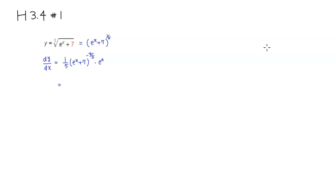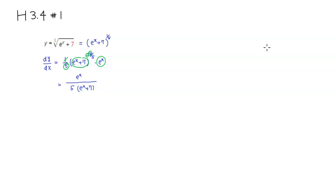To rewrite this: e to the x lives upstairs, so we put e to the x on top. There's a five on the bottom, so we put five on the bottom. Since we have a negative power, e to the x plus seven goes to the bottom, raised to the fourth power. The one-fifth becomes a fifth root, so we have a fifth root in the denominator.